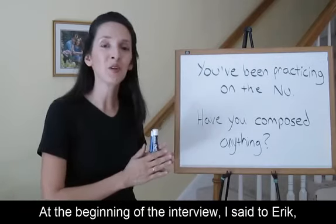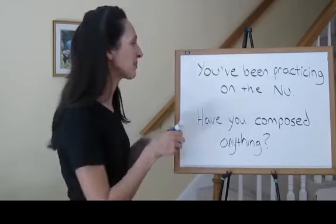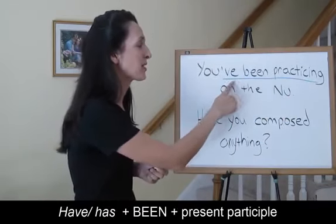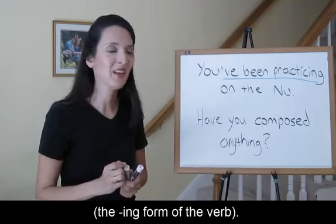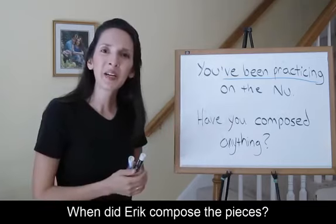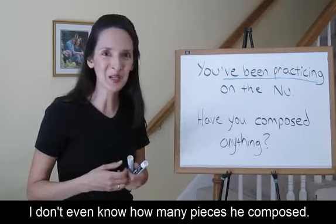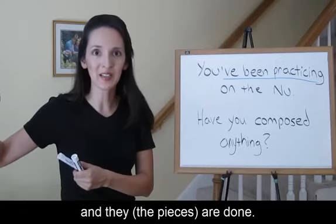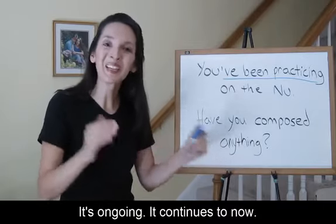At the beginning of the interview, I said to Eric, you've been practicing on the new. Have you composed anything? Here's the example of the present perfect progressive: have or has plus been plus the present participle, the ing form of the verb. Feel the difference — unfinished, finished. When did Eric compose the pieces? I don't know. The act of composing happened in the past and they're done. Practice began in the past and it's not finished. It's ongoing. It continues till now.